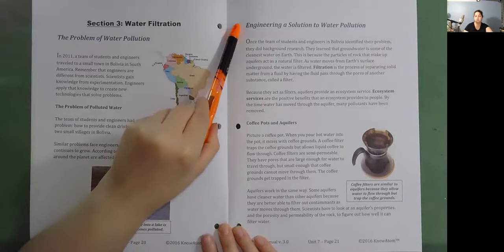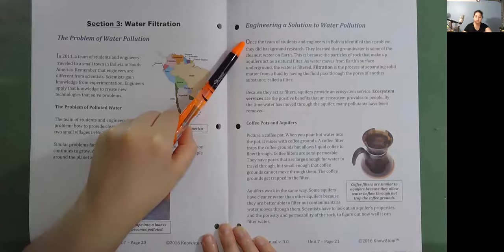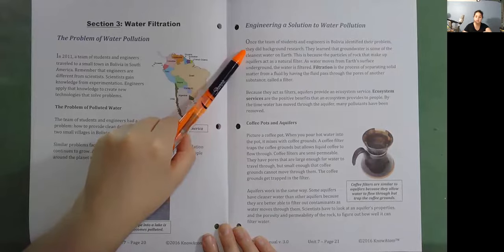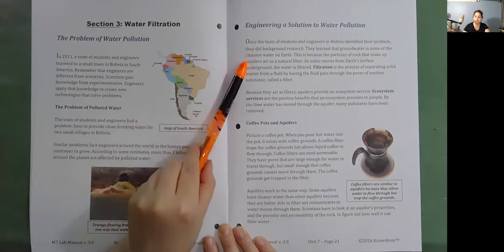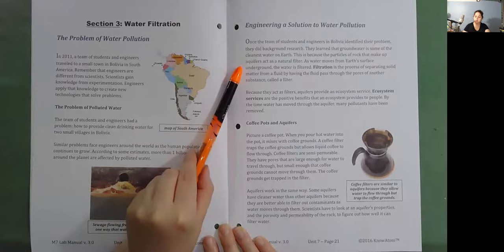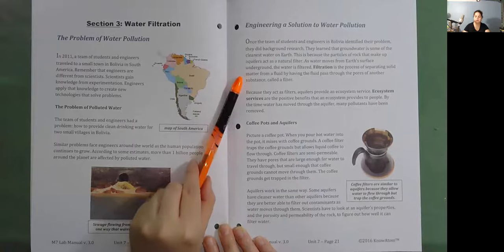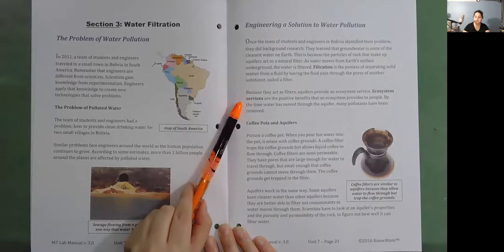Engineering a Solution to Water Pollution. Once the team of students and engineers in Bolivia identified their problem, they did background research. They learned that groundwater is some of the cleanest water on Earth. This is because the particles of rock that make up aquifers act as a natural filter. As water moves from Earth's surface underground, the water is filtered. Filtration is the process of separating solid matter from a fluid by having the fluid pass through the pores of another substance, called a filter. Because they act as filters, aquifers provide an ecosystem service. Ecosystem services are the positive benefits that an ecosystem provides to people. By the time water has moved through the aquifer, many pollutants have been removed.